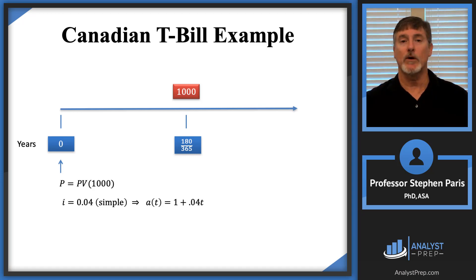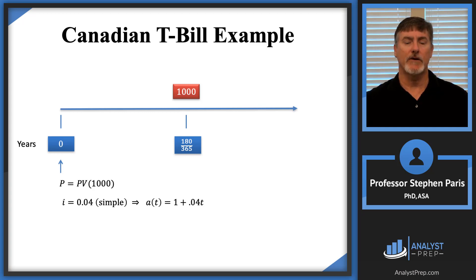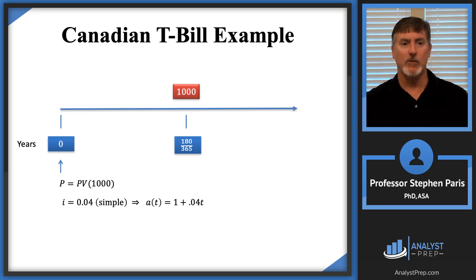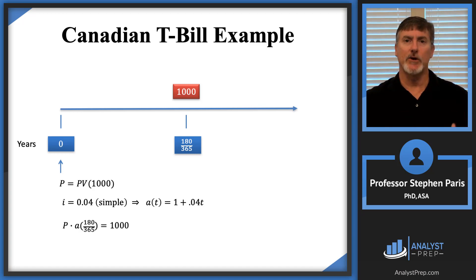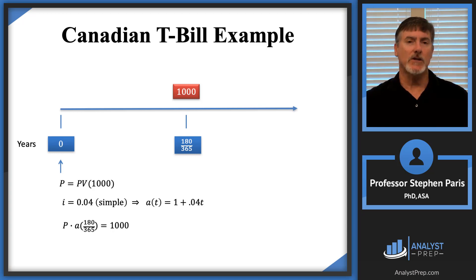The accumulation function is 1 plus the simple interest rate times T, so A(T) = 1 + 0.04T. The relationship between the price and the redemption value is: if you take the price of the T-bill and accumulate it to the time at which it matures — in this case 180/365 — you get the redemption value of $1,000. That last equation is what I need to solve.